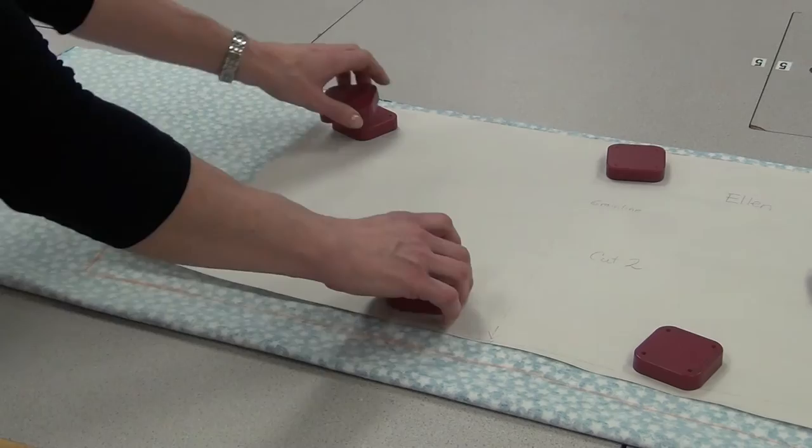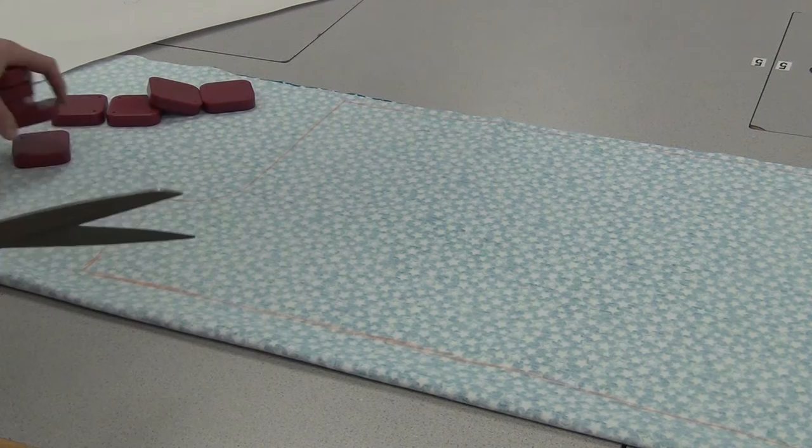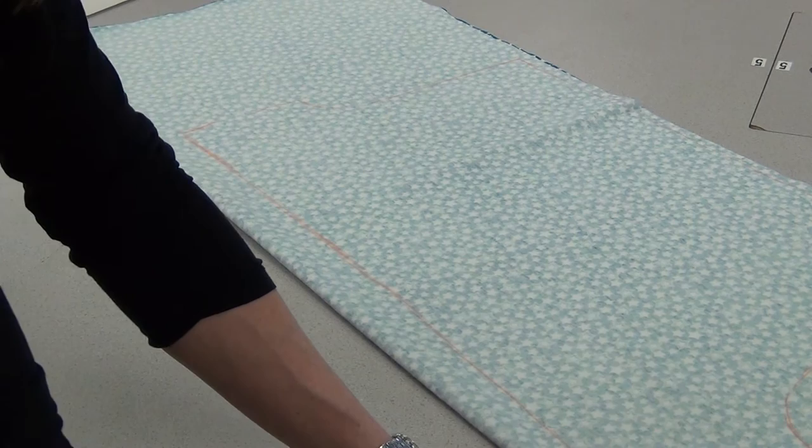Once you've decided and you've drawn, you can take away the weights and now you're going to use scissors. I like the titanium scissors, you can use those or the silver scissors but I don't recommend the black scissors. They're not really great for cutting fabric, they're more for cutting threads. You're going to cut through both layers at the same time and cut just outside that line that you drew.